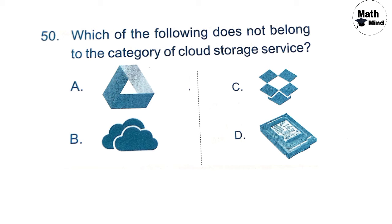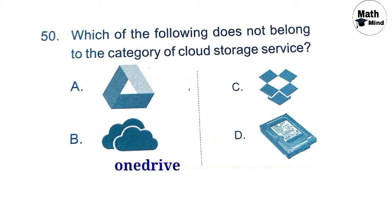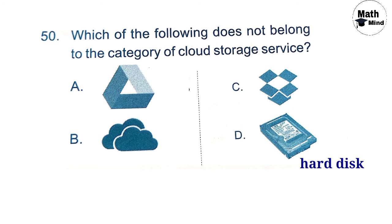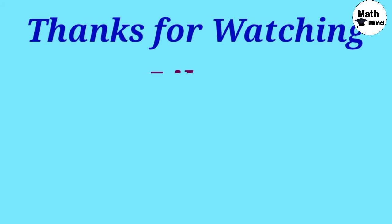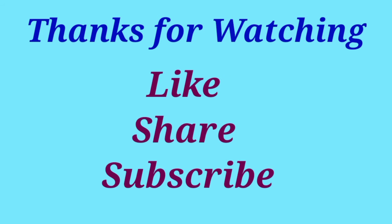Question 50: Which of the following does not belong to the category of cloud storage? Option A: Google Drive. Option B: OneDrive. Option C: Dropbox. Option D: Hard disk. Only option D is not a cloud storage device; all others are. So option D is correct. Thanks for watching — like, share, and subscribe to get more videos. Bye bye!